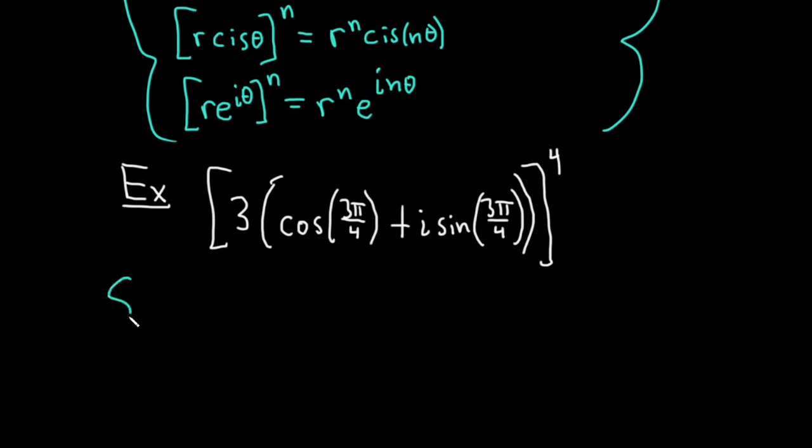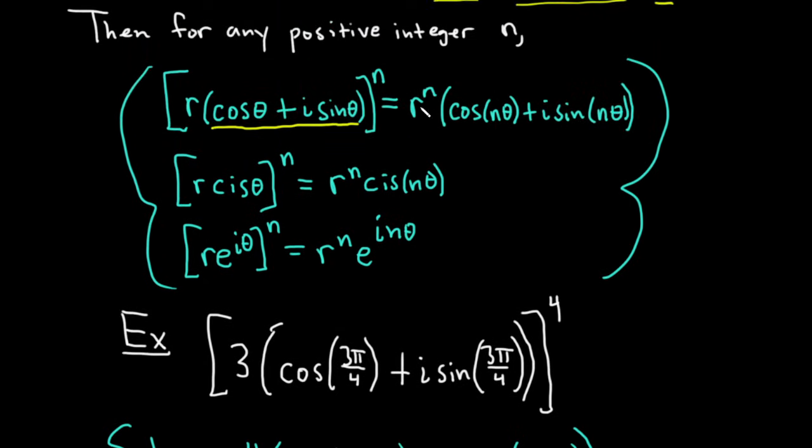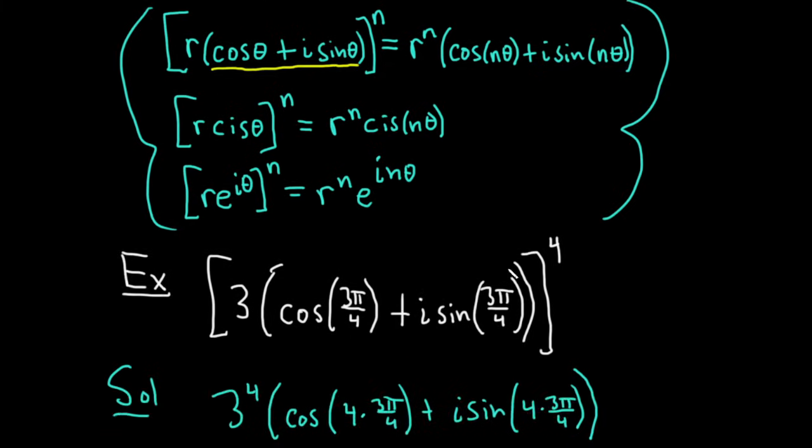Solution. Pretty easy. All we do is, using the formula, we raise the r. This is our r, so that will be three to the fourth. And then the four goes inside the trig functions. So it'll be cosine of four times three pi over four, that's your n, plus i sine of four times three pi over four. And let me just show you the formula up here, just so you can see we're using it correctly. So it's r to the n, and then cosine n theta, i sine n theta.